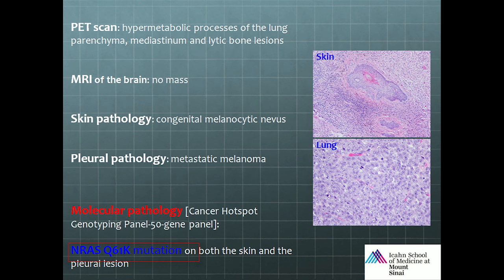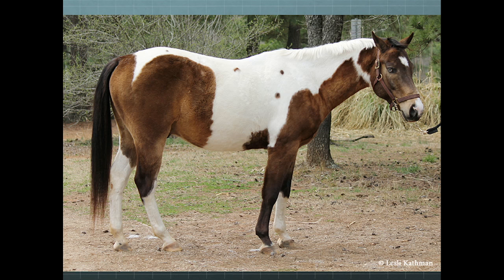So we pick up an NRAS Q61K oncogenic mutation, confirming that this patient has a RAS mutation. Obviously we wouldn't put this patient on a BRAF inhibitor. He's starting on immunotherapy.